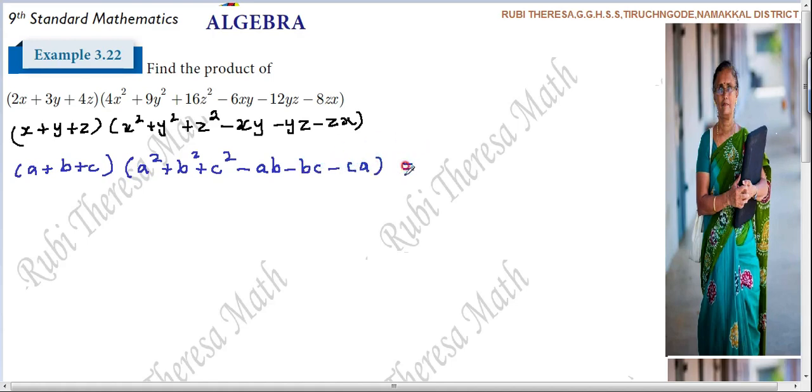Identically equal to what is the answer here? Very good. a³ + b³ + c³ - 3abc. a³ + b³ + c³ - 3abc.